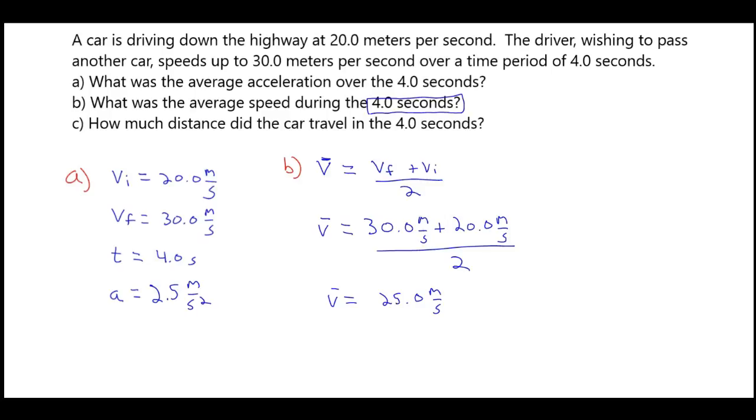What this means is if instead of traveling at 20 meters per second and then accelerating to 30 meters per second, we could have just traveled at 25 meters per second for the entire 4 seconds, and it would have been the same thing.